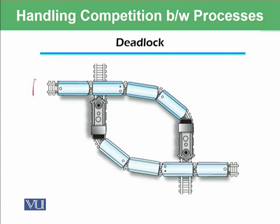Here is a train A and train B. Train A is going on this track and train B is going on this track. Now train B is waiting that train A should go first, and similarly train A is waiting that when train B is gone then it will get a path to go further on this track. So this means A is waiting for B and B is waiting for A.